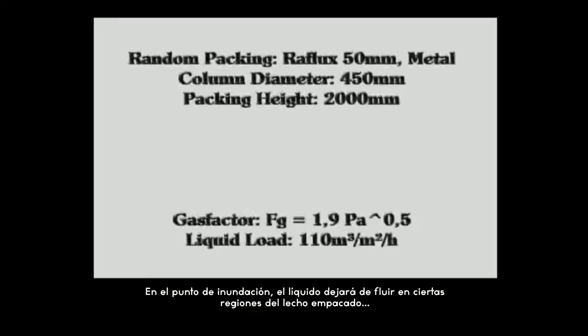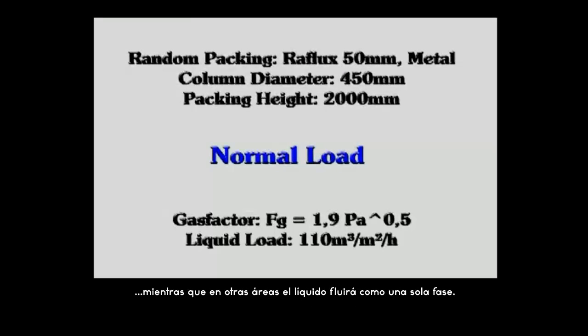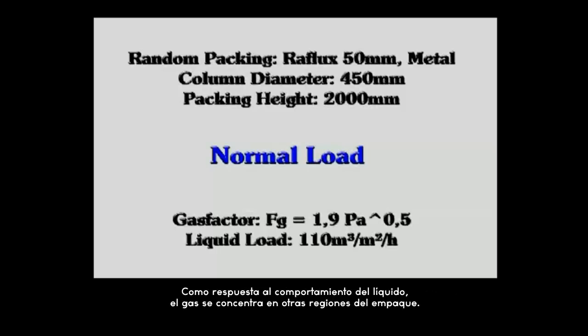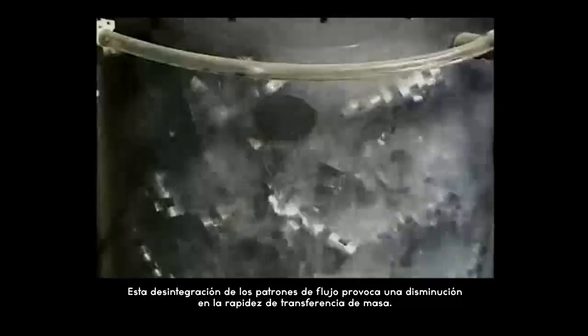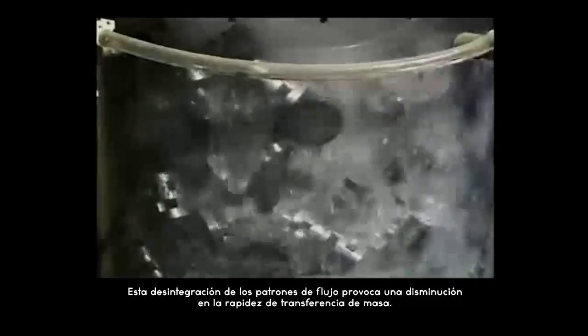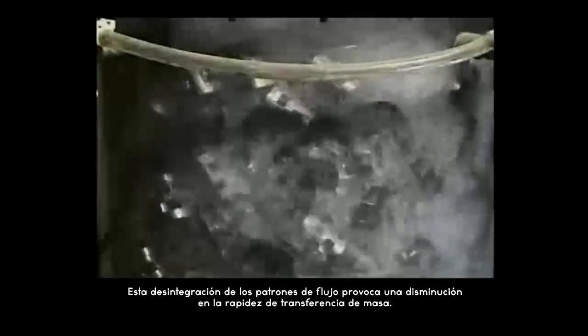Increasing the liquid throughput, the so-called flooding point will be reached eventually. At the flooding point the liquid is prevented from draining in some areas of the packing, while in other areas the liquid is draining off as a single phase flow. In response to this liquid behavior the gas is concentrated in other regions of the packing. This disintegration of the reacting media leads to a declined mass transfer.